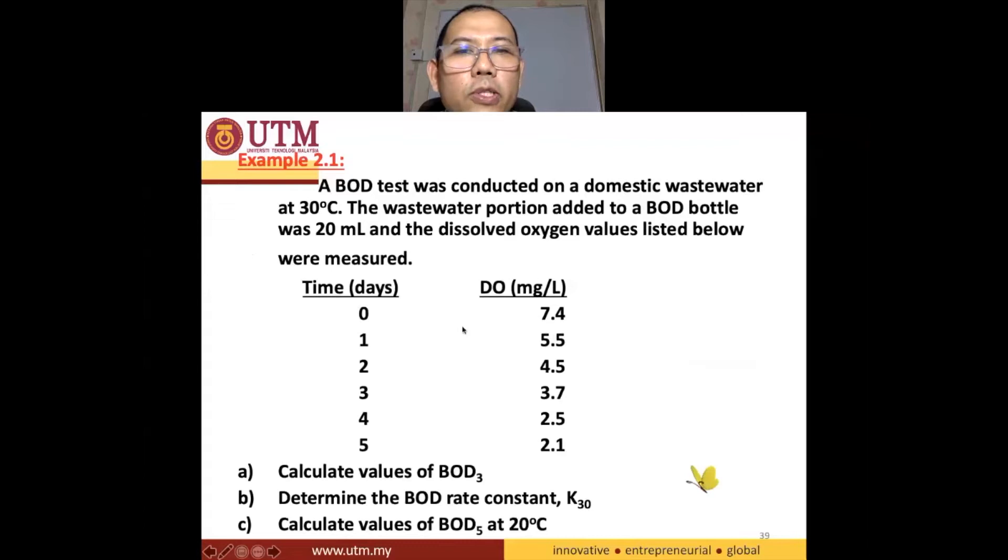And then at day 0, 7.4. At day 1, 5.5. To make it fast, at day 5, 2.1 mg per liter.